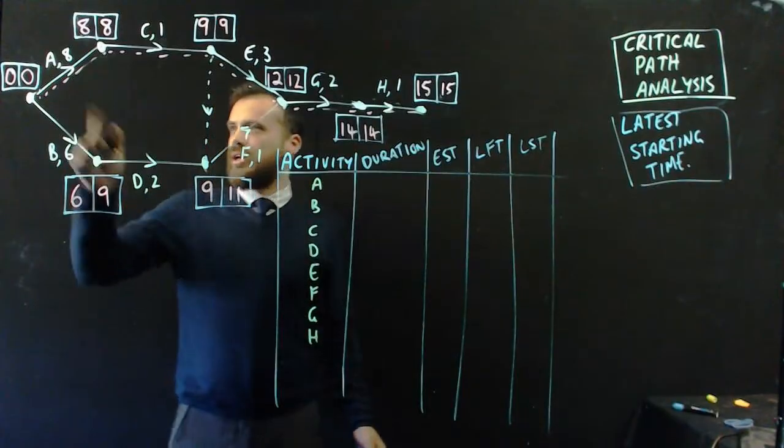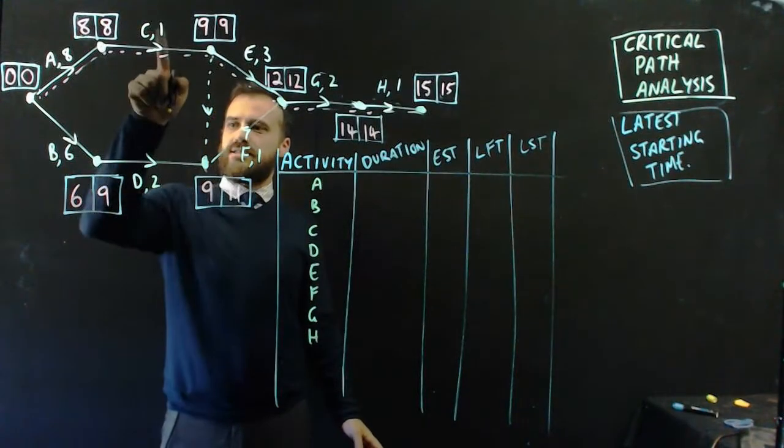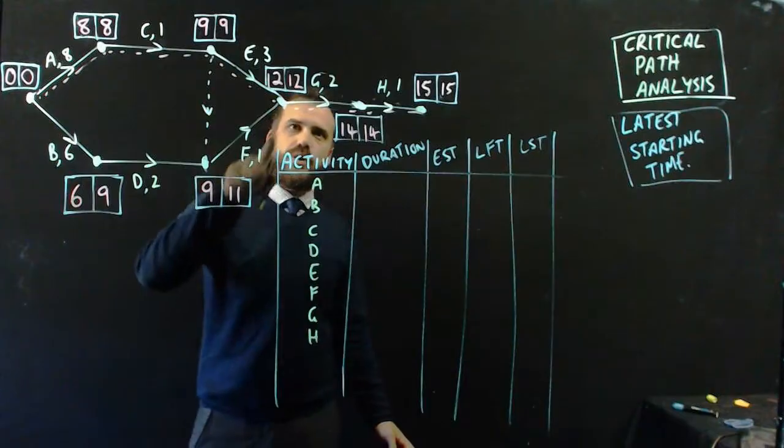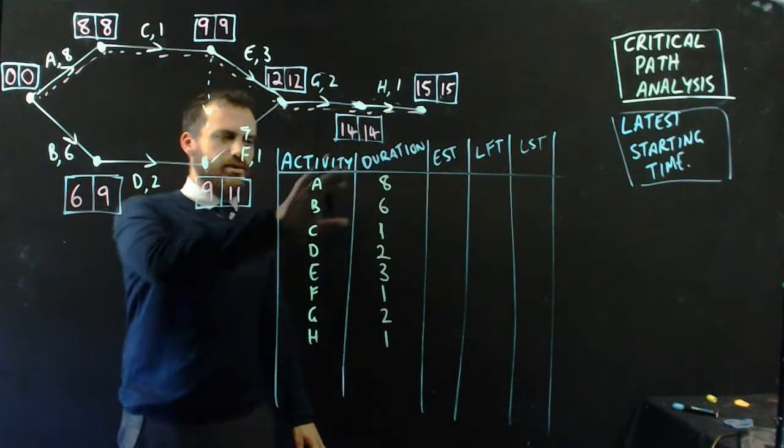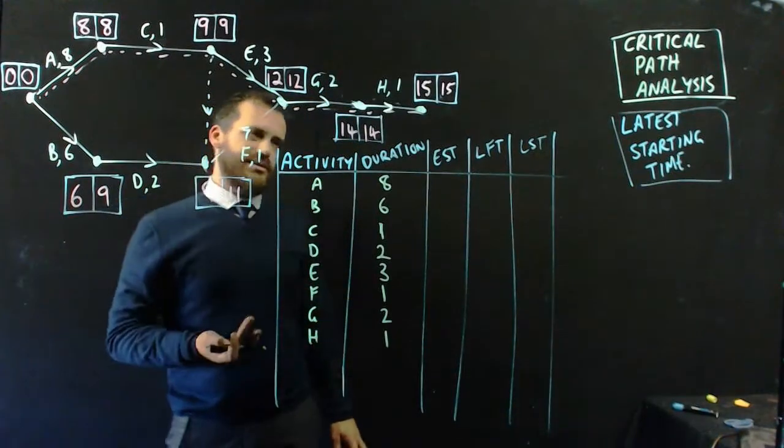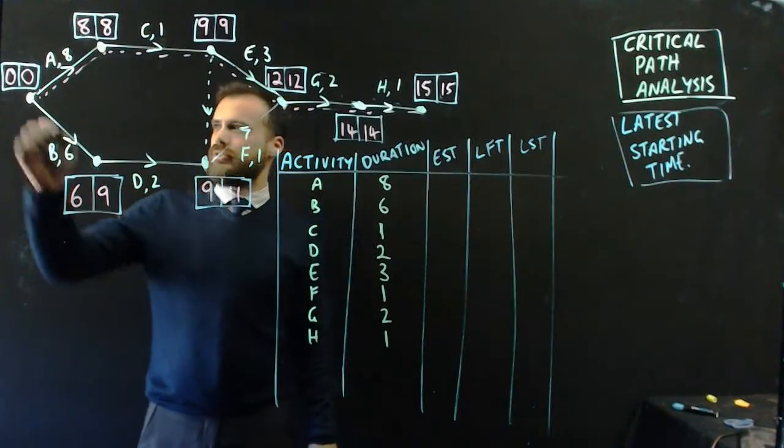Now, the duration bit's really straightforward. You don't need to watch me do that. A's going to take 8 hours, B's going to take 6, C's going to take 1, D's going to take 2, 3, 1, 2, and 1. All right, they're the durations. Now, what about earliest starting times? Well, we've already calculated all of those.